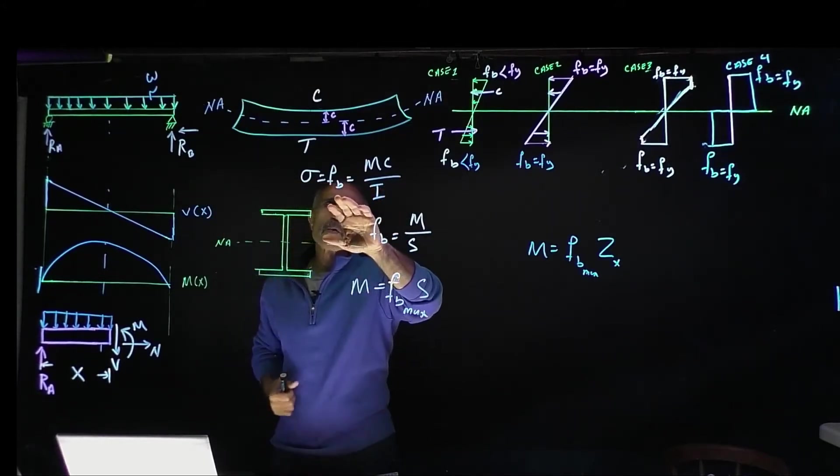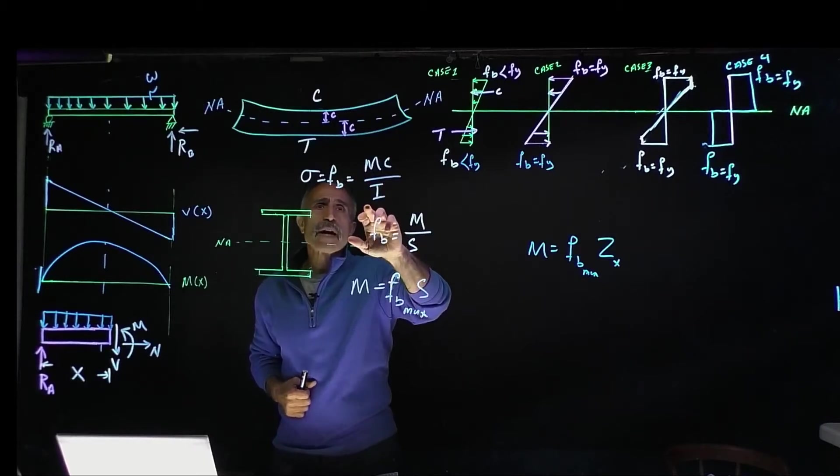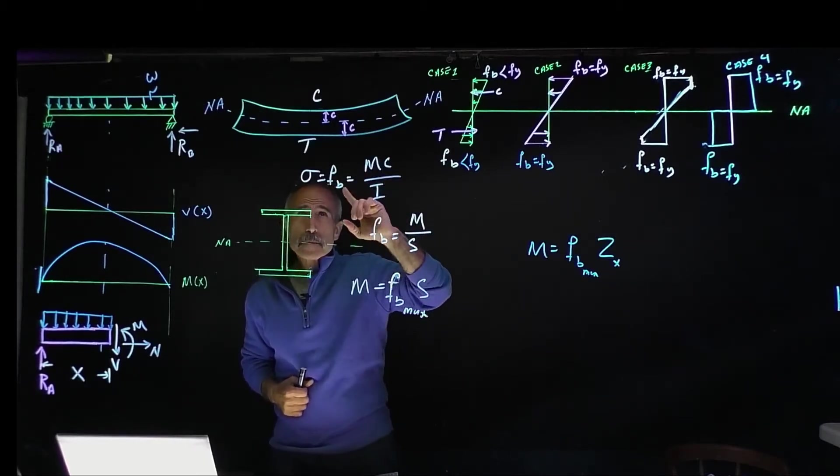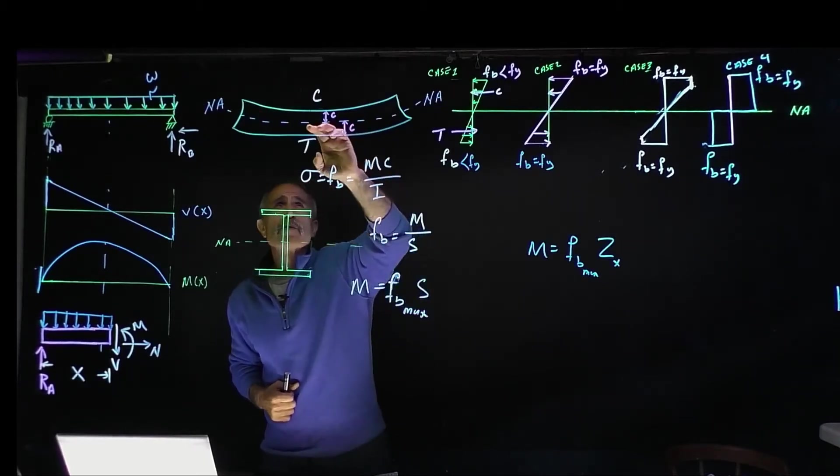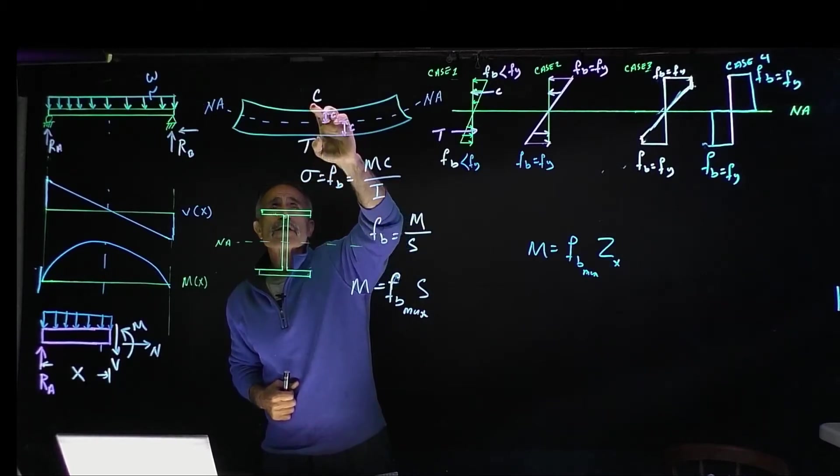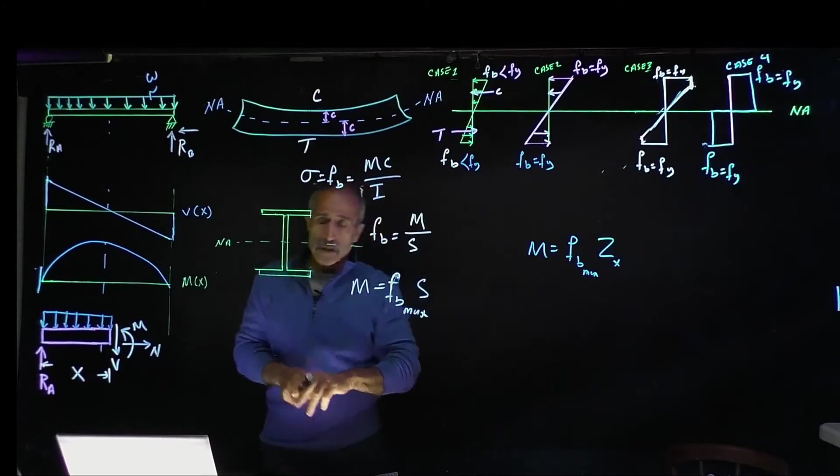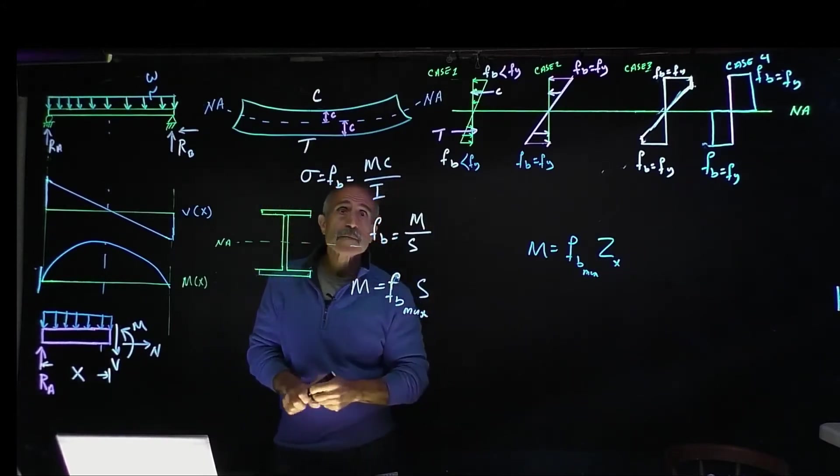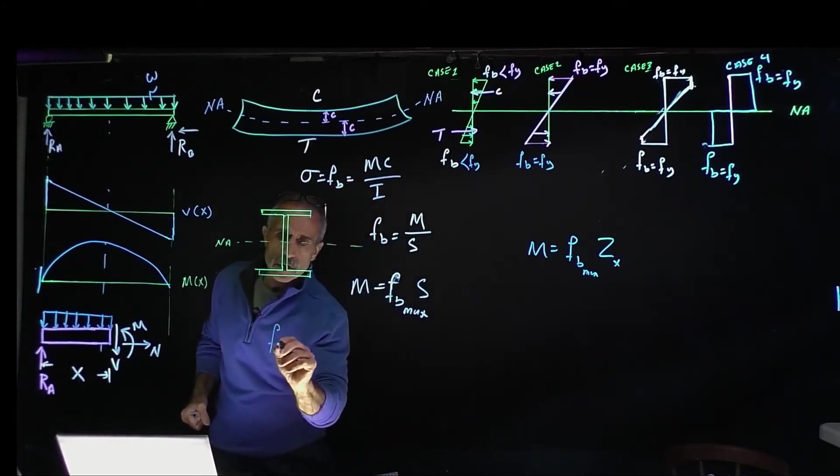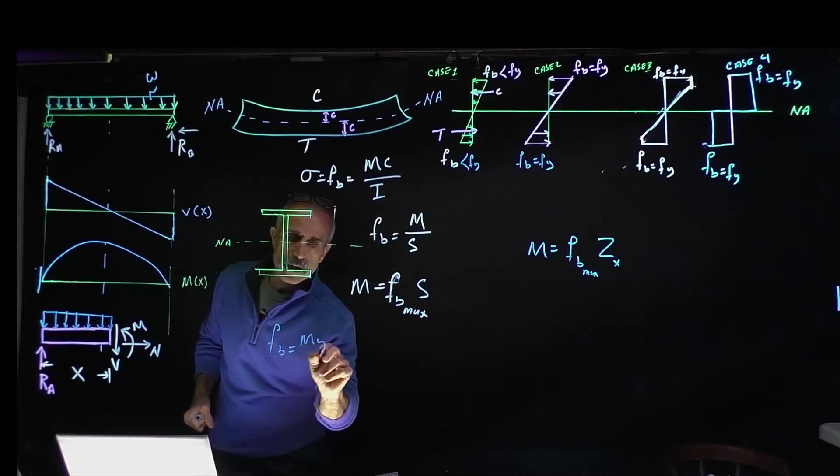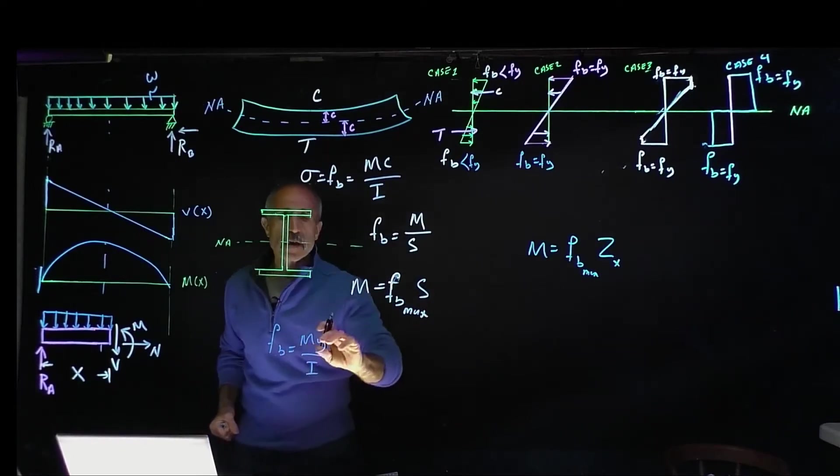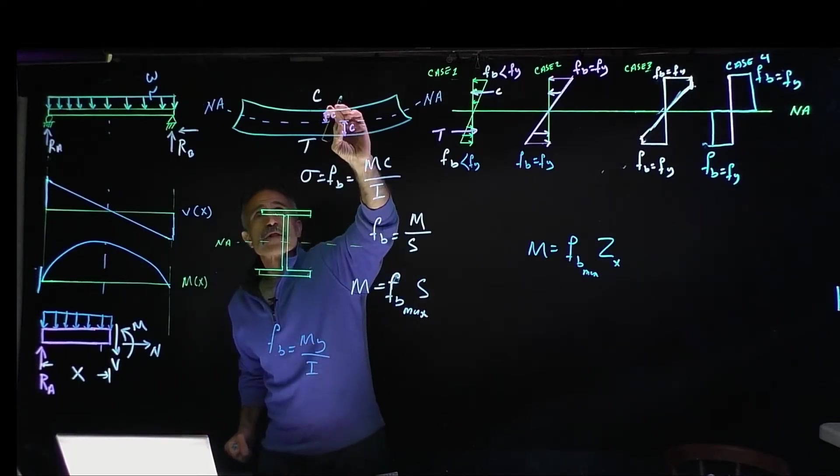I'm interested in the bending moment, so the bending moment formula that we all know is f_b = mc/i, where c is the distance from the neutral axis to the furthest point. We know that is M*y/i (moment of inertia), but when y becomes the furthest point, you call it c.